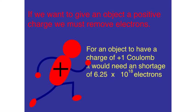If we wanted to give an object a positive charge, we would have to remove electrons. And if we wanted to give it a positive charge of plus one coulomb, we would need to remove a lot of electrons: 6.25 times 10 to the 18th electrons.